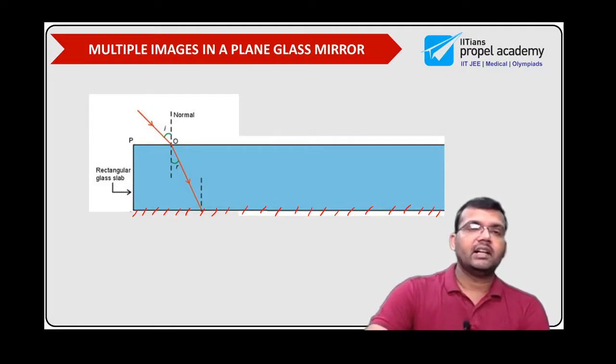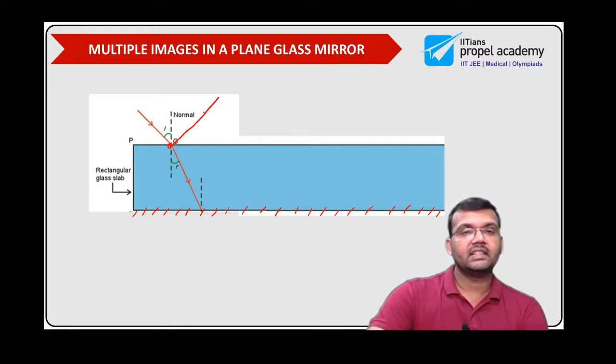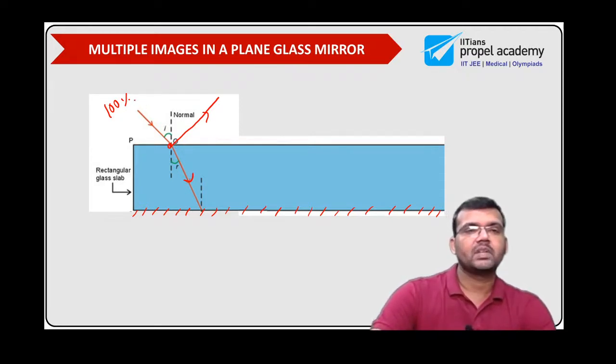So once the light ray falls on the first refracting surface, it will suffer reflection and refraction. So let's say you have 100% of the intensity falls on the object. So let's say this is object O.